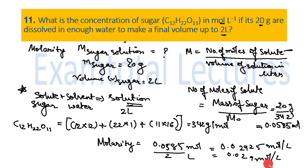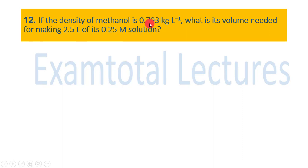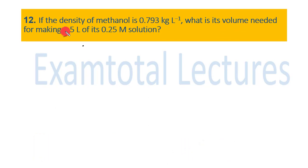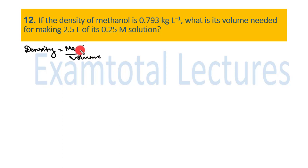Question 12: If the density of methanol is 0.793 kg per liter, what volume is needed to make 2.5 liters of a 0.25 molar solution? We are given density of methanol. We need to find the volume of methanol to prepare 2.5 liters of solution with molarity 0.25 M.